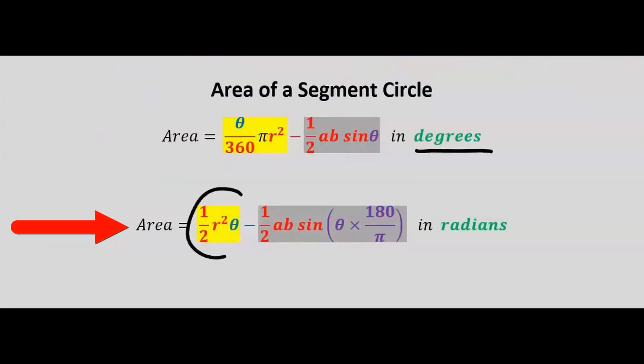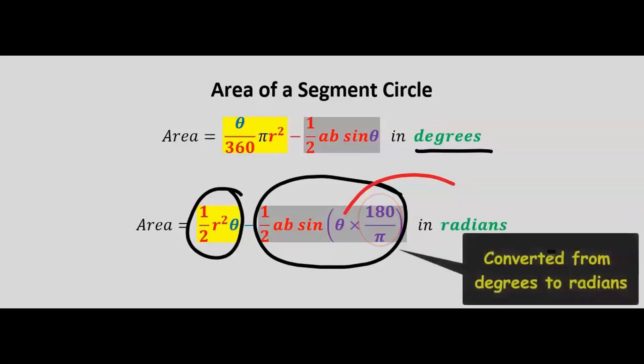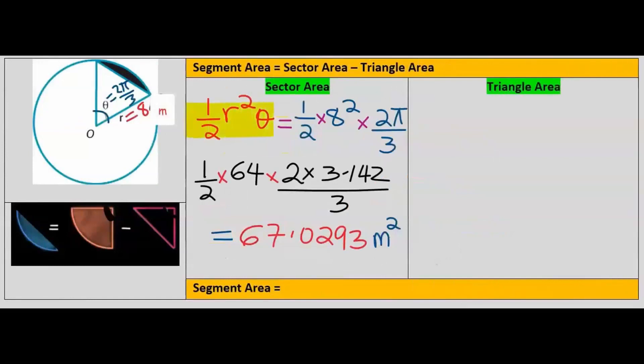It is the area of the sector minus the area of the triangle. The angle for this formula of a triangle is usually in degrees. Hence, we're going to multiply this by 180 divided by π. From the area of a sector with radians, when you substitute and solve carefully, you're going to get 67.0293 meters squared.